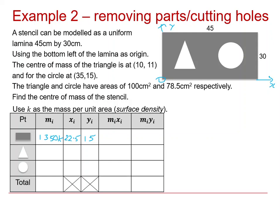And then we'll need to do the usual multiplication of 1350k times 22.5 to find the mixi term, and similarly for miyi. Now for the triangle, we'll have areas of 100, so that's just 100k. And the triangle, we're told, has a centre of mass at 10 and 11, so we can fill those in. So again, this entry will be 100k times 10. That one's trivial, so I'll put it in.